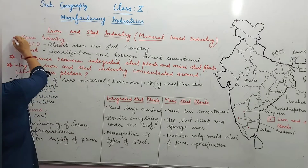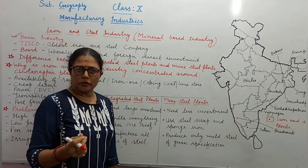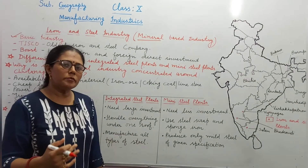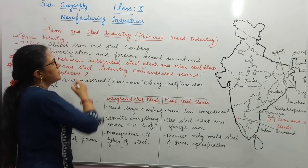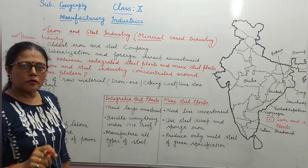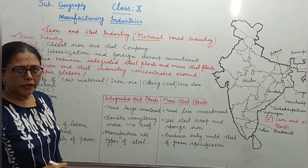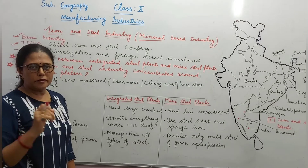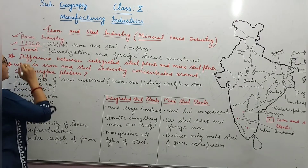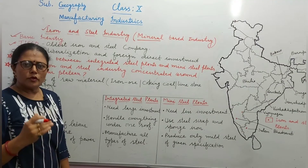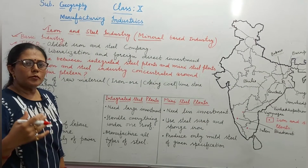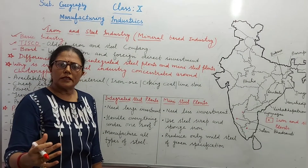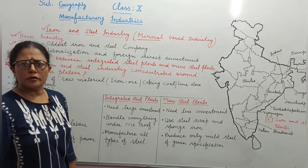This industry is known as the basic industry, also called the iron and steel industry. It is known as the primary industry because in this industry there is very much capital investment, more energy, and more money required.